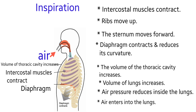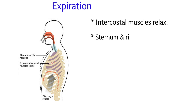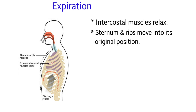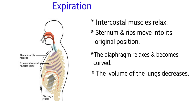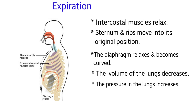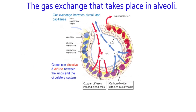During expiration, the volume of the thoracic cavity decreases to reduce the volume of the lungs. The intercostal muscles relax, and the sternum and ribs move back to their original positions. The diaphragm relaxes and becomes curved again. So the volume of the lungs decreases, the pressure inside the lungs increases temporarily, and air moves out from the lungs to the atmosphere through the nasal passage.